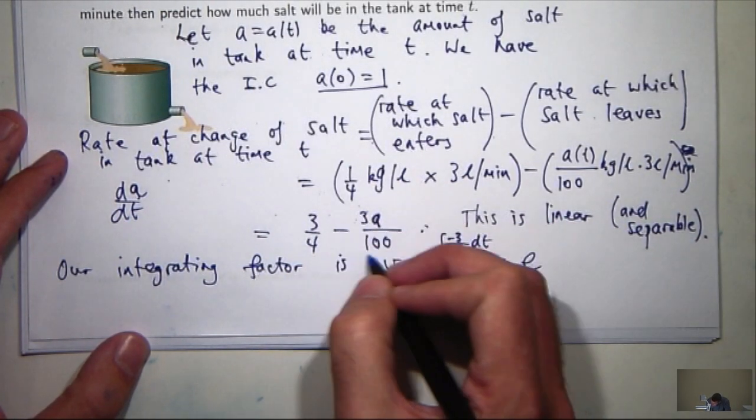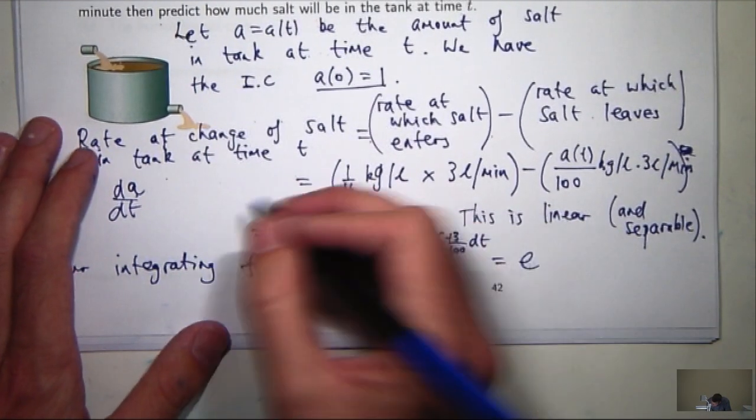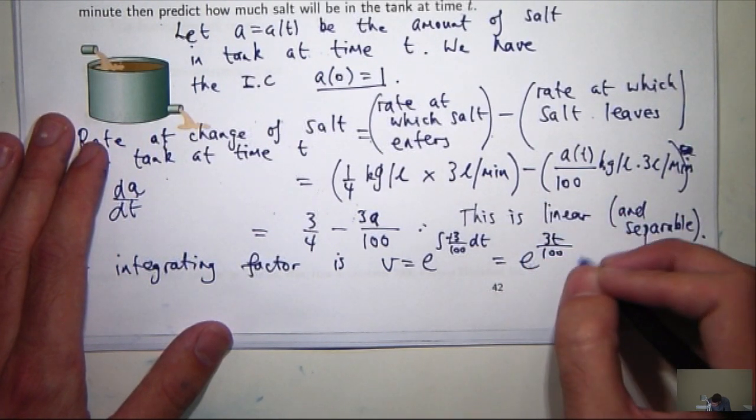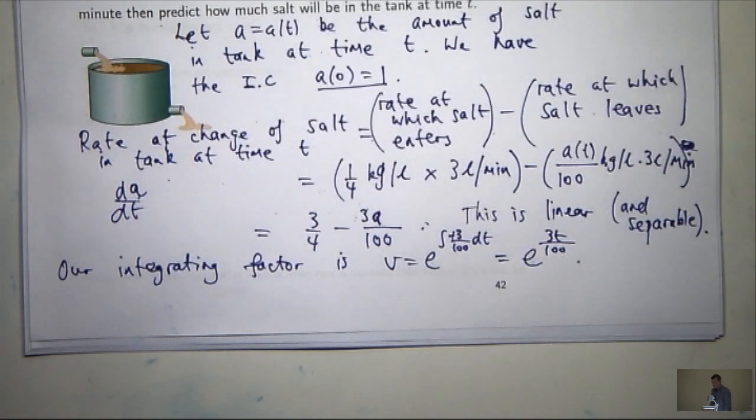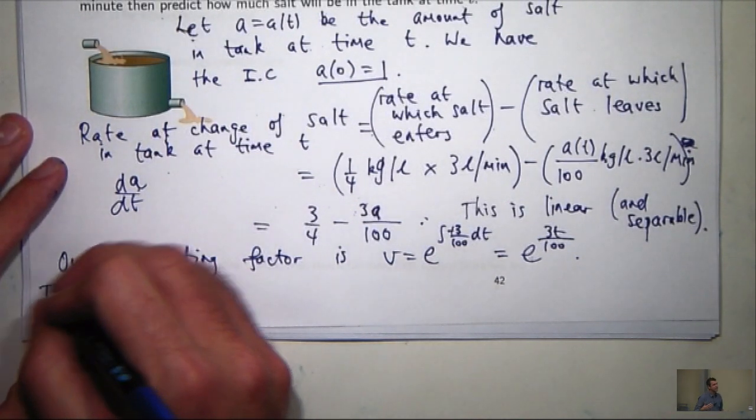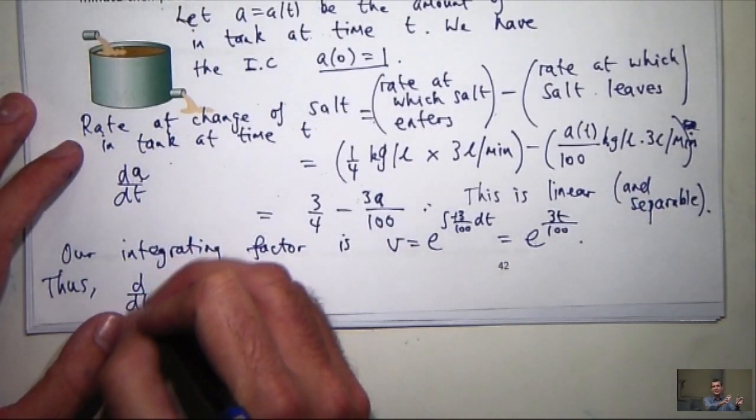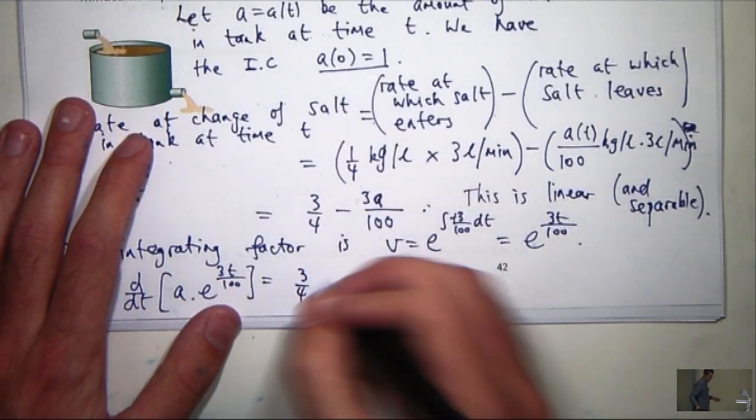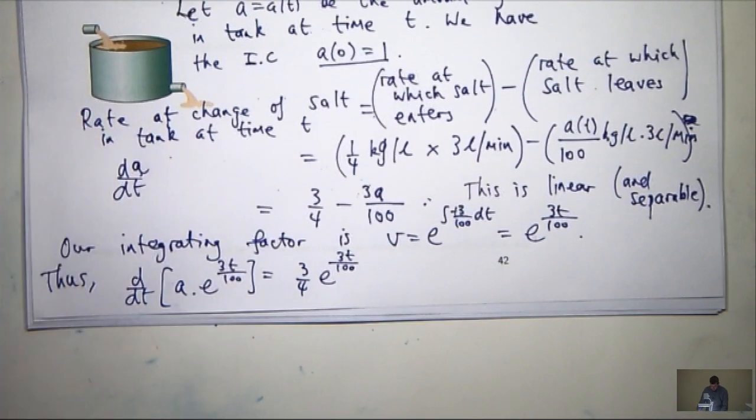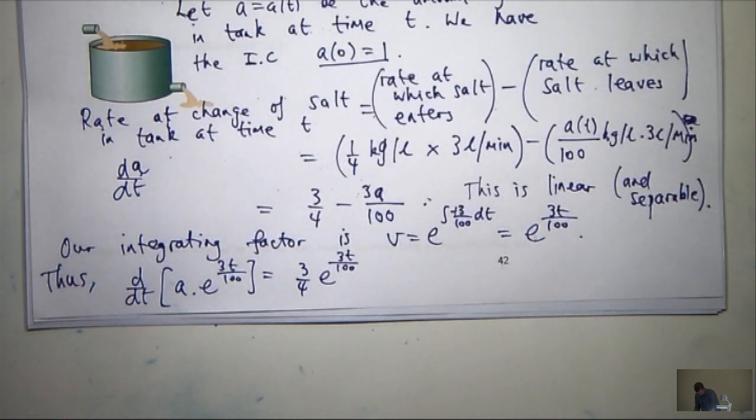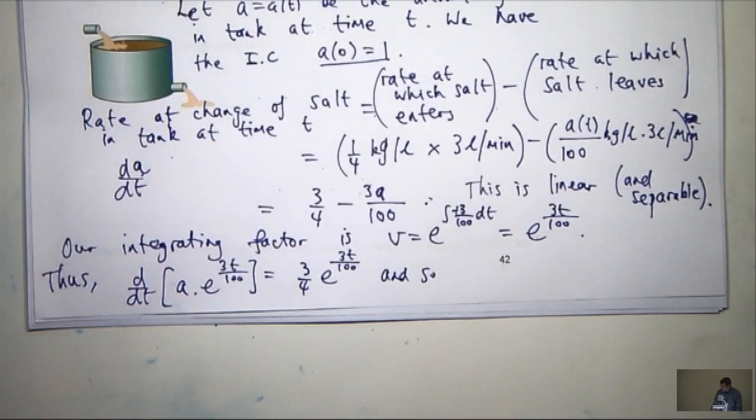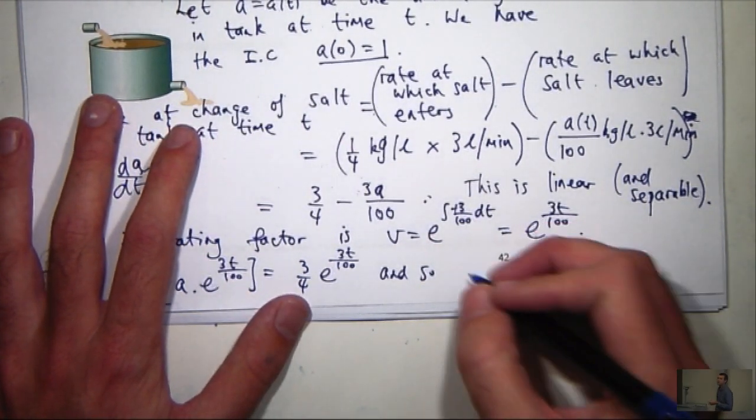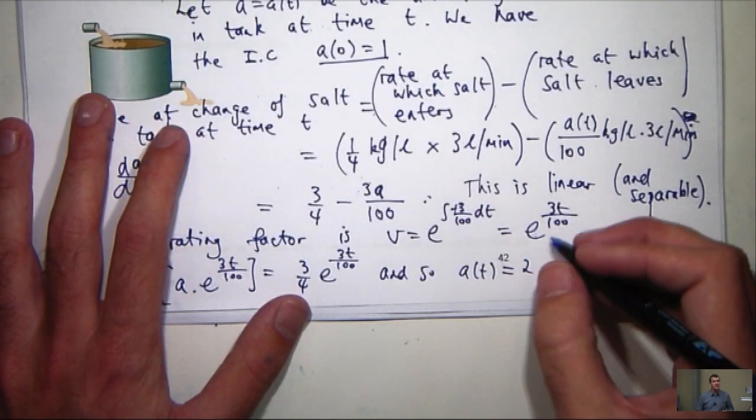So the integrating factor here is the following. So it's e to the integral of minus 3 on 100 dt. It's just the, oh sorry, positive. Positive. Because you bring that to the other side, it's going to be positive. Alright, so it's going to be 3t on 100. So then multiplying through by my integrating factor and collapsing using the product rule, I'll come up with the following. So all I need to do now is integrate that bottom line, the d/dt is going to disappear and then rearrange.